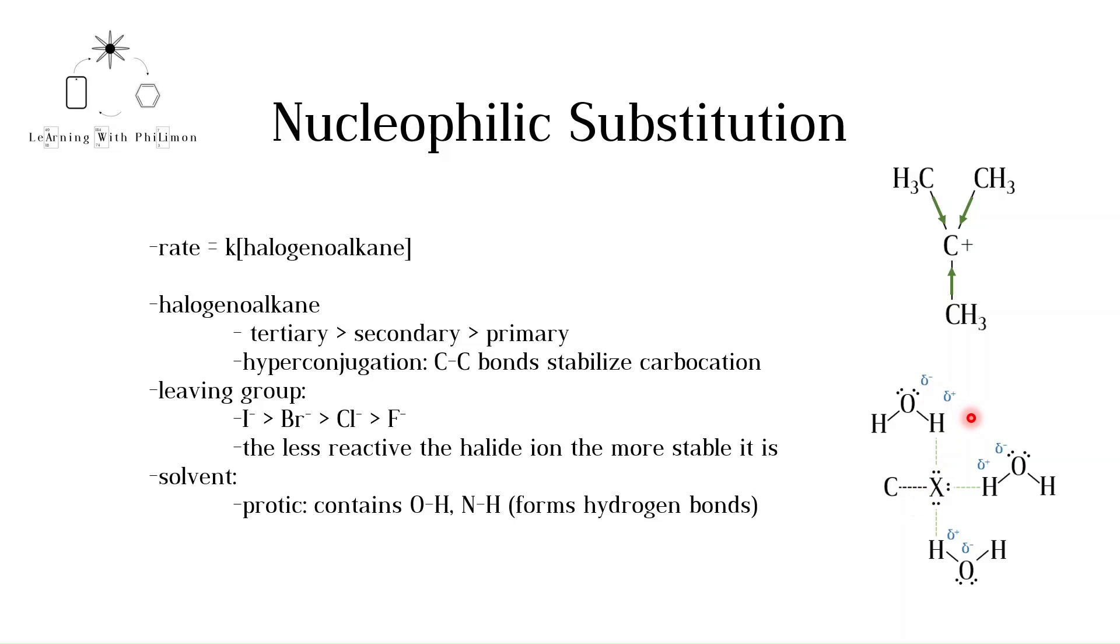The slightly positive hydrogen atoms of the water molecules are attracted to the lone pairs of the halogen atom. This interaction speeds up the first step of the reaction by making it more likely for the carbocation to form.